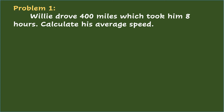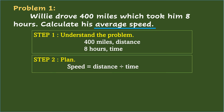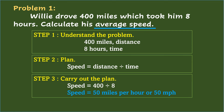There are steps to follow when solving problems involving average rate and speed. Problem 1: Willie drove 400 miles, which took him 8 hours. Step 1 — Understand the problem: the average speed is being asked; the distance is 400 miles and the time is 8 hours. Step 2 — Plan: since speed is missing, use speed equals distance divided by time. Step 3 — Carry out the plan: speed equals 400 divided by 8, so the speed is 50 miles per hour.